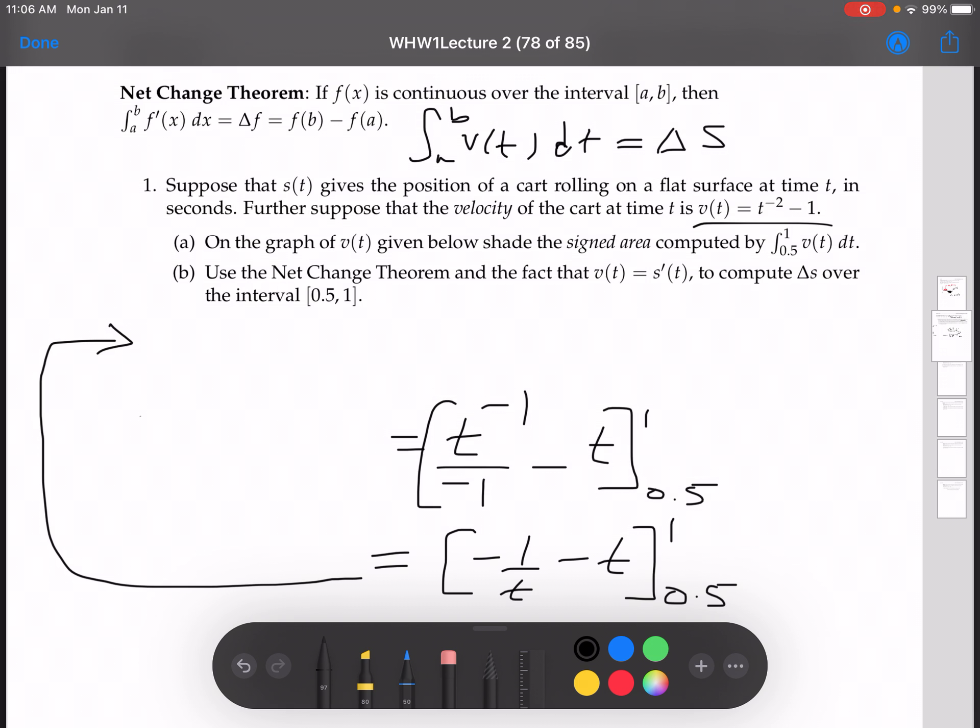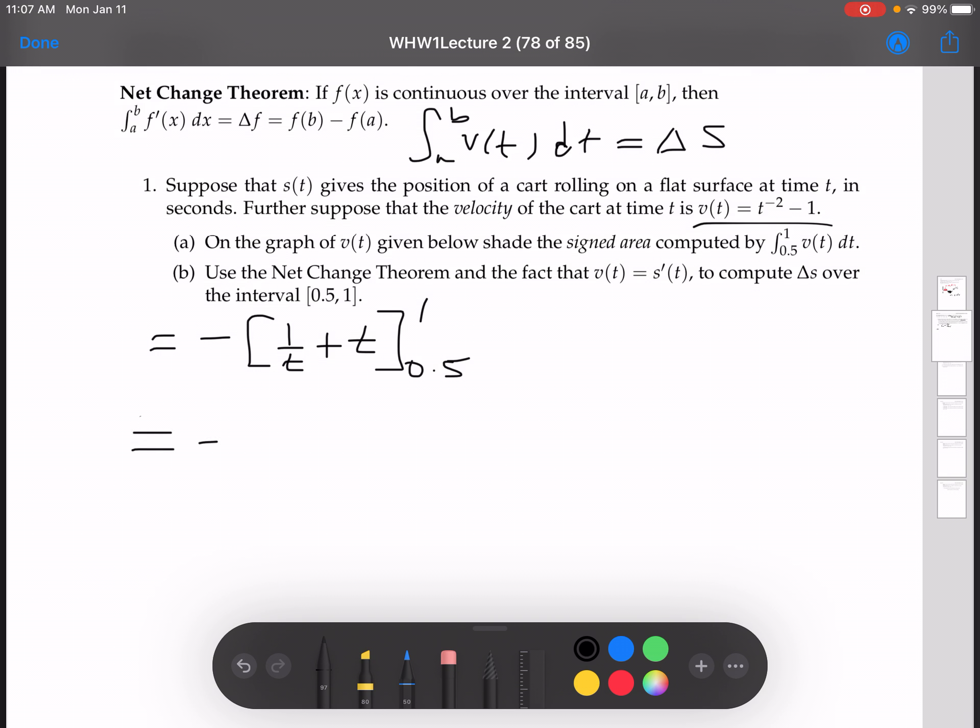Alright, so the way I would do this personally is I see this negative in here. I think, okay, get a negative within both of them. I can pull this out of the entire thing. It gives me negative 1 over t plus t from 0.5 to 1. Alright, so we got 1 over 1 plus 1 minus 1 over 0.5 plus 0.5.